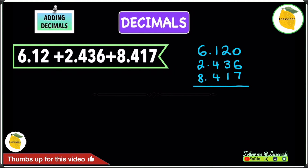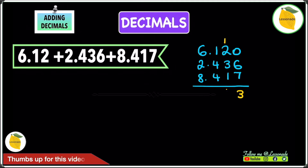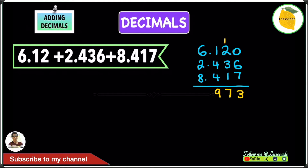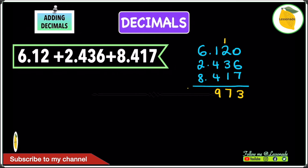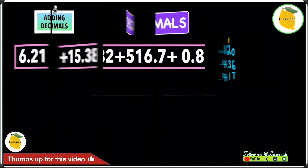0 plus 6 plus 7: 0 plus 6 is 6, then 6 plus 7 is 13 — write 3, carry 1. 1 plus 2 plus 3 plus 1 is 7 — write 7. 1 plus 4 plus 4 is 9 — write 9. Finally, 6 plus 2 is 8, and 8 plus 8 is 16 — write 16 and the decimal point. Our answer is 16.973.